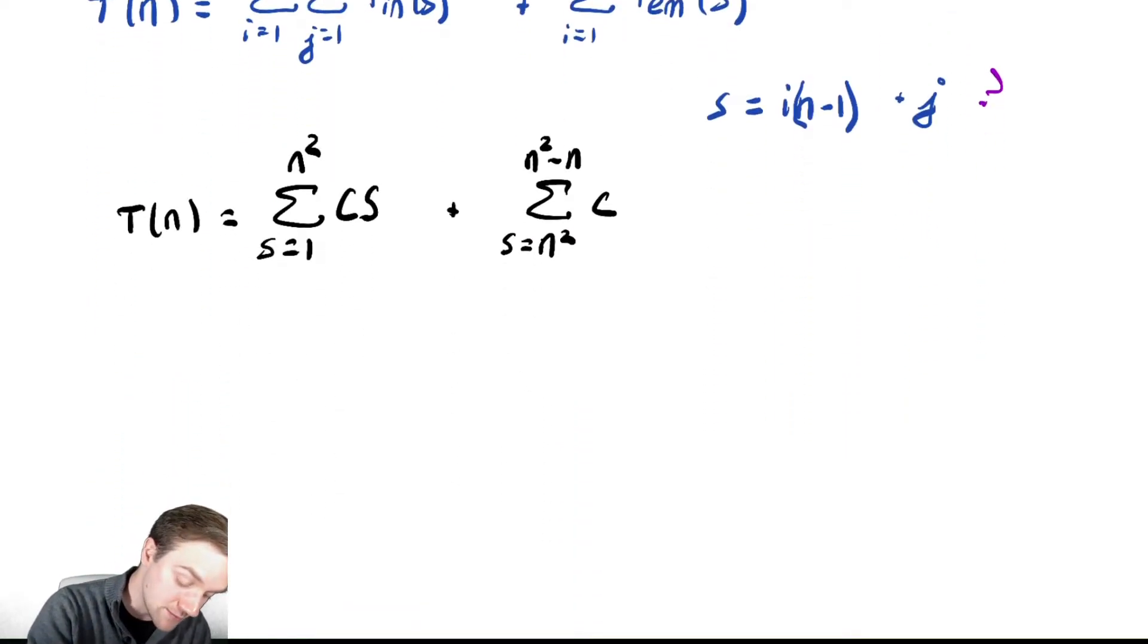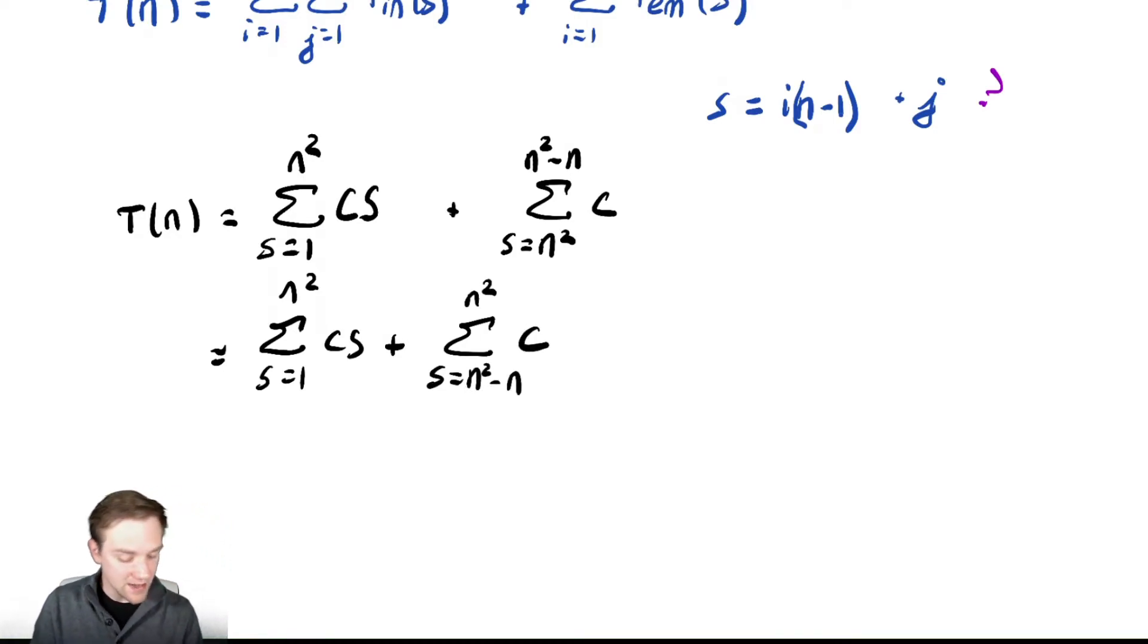Now I'm going to rewrite that last summation in a more standard order. So I can write it as the sum from s equals 1 to n squared of Cs, the second sum I'm going to rewrite as the sum from s equals n squared minus n to n squared of C. And now I have some nice easy summations to analyze.